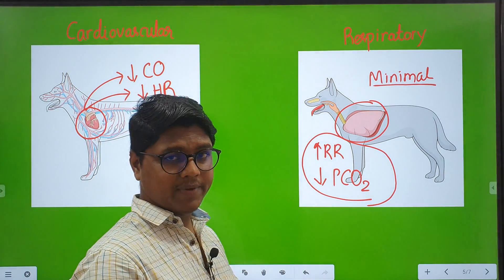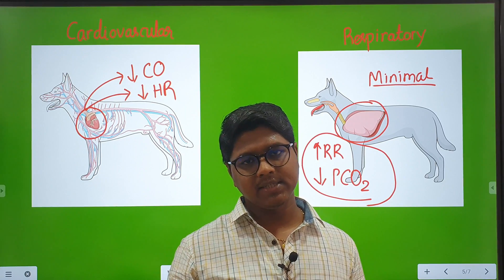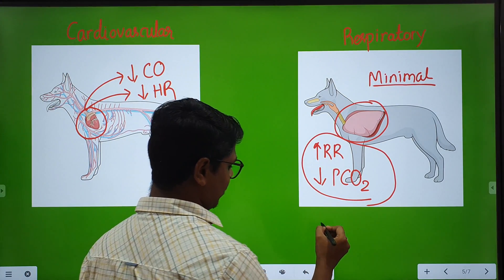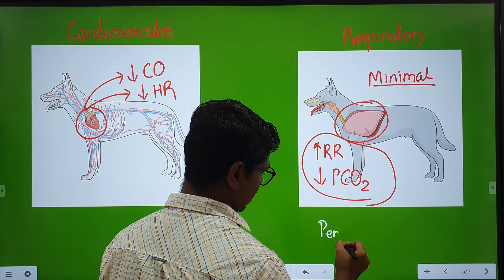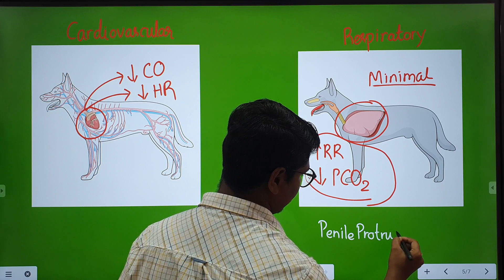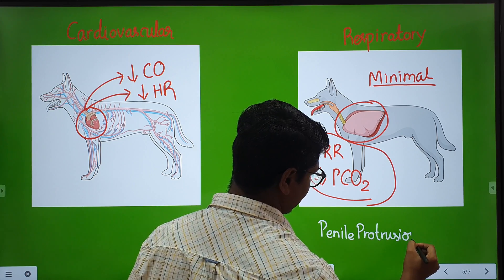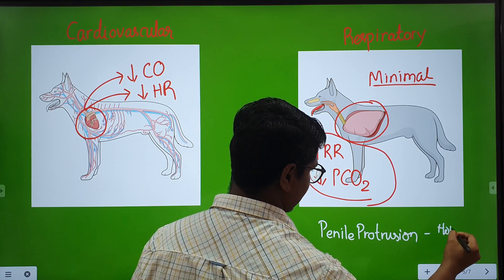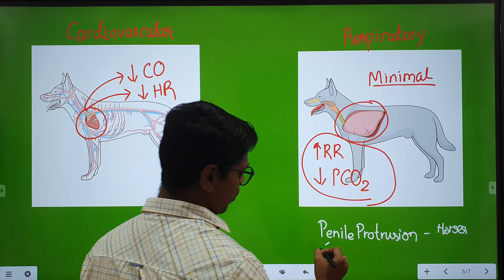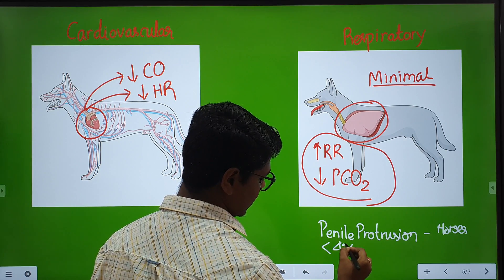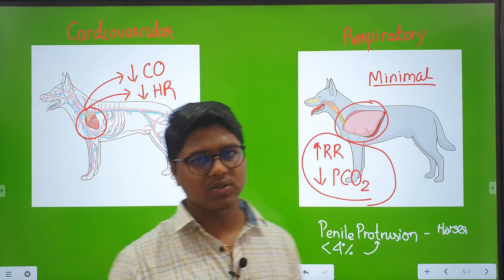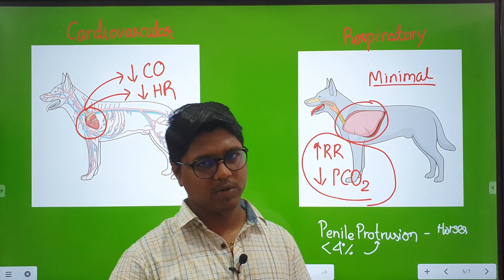Regarding the effect on other systems, they are exactly the same as the phenothiazines group. The only difference is penile protrusion. In case of phenothiazines, you may find dose-dependent penile protrusion in horses. This group is used in swines; in swines, less than 4% of the population may show penile protrusion. So penile protrusion is not a major concern with butyrophenones.